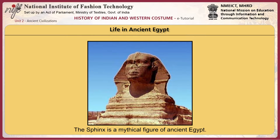Egyptian sculptures and paintings reveal a standardized ideal of beauty that remained constant for more than 3000 years. Both men and women were represented as being very slender and tall. The ideal man had a triangular build with broad shoulders, trim waist and narrow hips. The ideal woman had a small waist and breasts but full curvaceous hips and thighs.